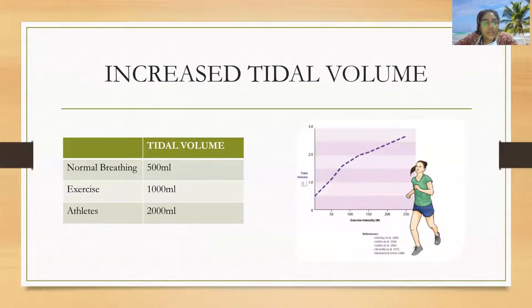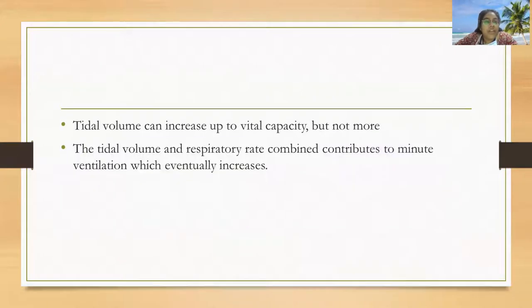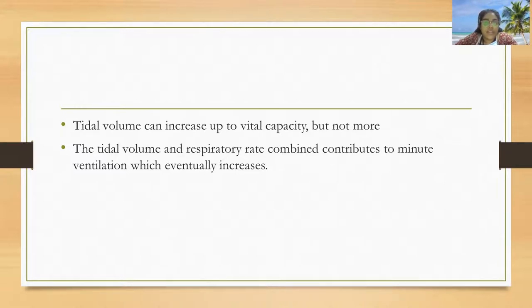There is also an increased tidal volume. Normally the tidal volume is 500 ml. During exercises it goes up to 1000 ml, and in athletes it is noted to be around 2000 ml. The tidal volume can increase only up to vital capacity, but not more than that. The tidal volume and the respiratory rate combined contribute to the minute ventilation, which eventually increases.